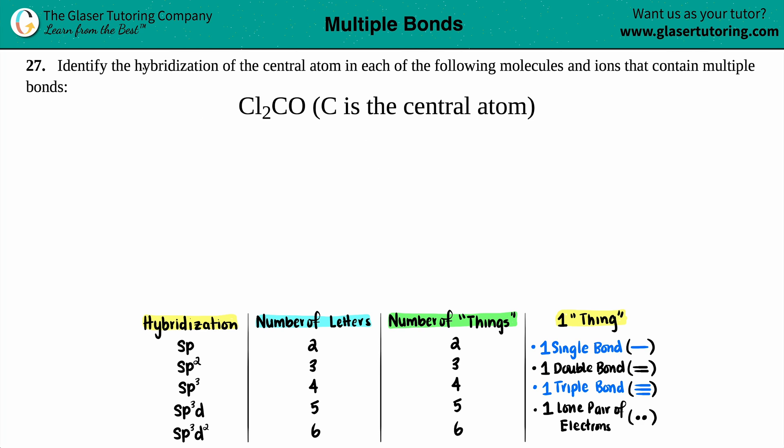Number 27, identify the hybridization of the central atom in each of the following molecules and ions that contain multiple bonds. We have Cl2CO, and they give us a hint that the carbon is the central atom, and that's the one that we have to solve for the hybridization.